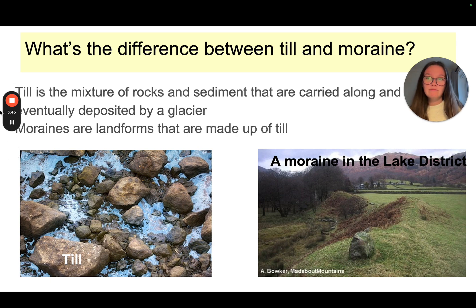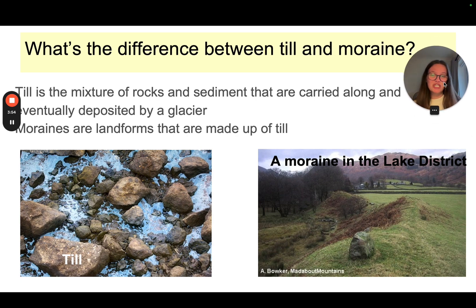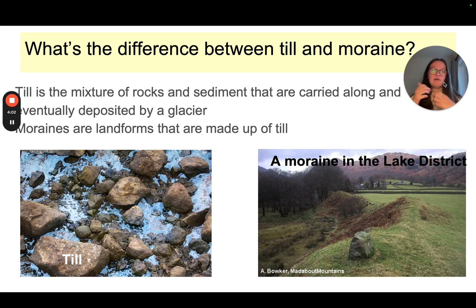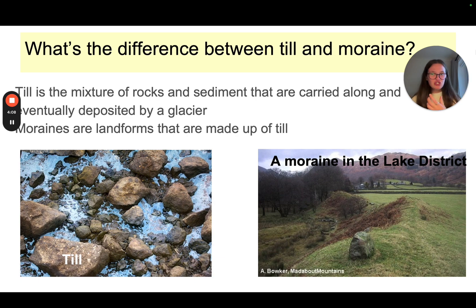Till is the mixture of rocks and sediment that are carried along and eventually deposited by a glacier. Landforms are just landforms made up of that till. It's unsorted — it's not been carried by meltwater, so it's not all smooth like rocks would be on the beach. There's no rhyme or reason to where it goes.